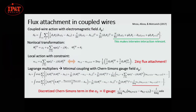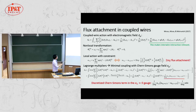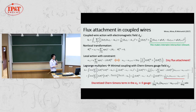A question: what is A₁ with a spatial index? A₀ is the temporal component of the gauge field. A₁ is the component along the chain. We always work in the A₂=0 gauge in this approach.